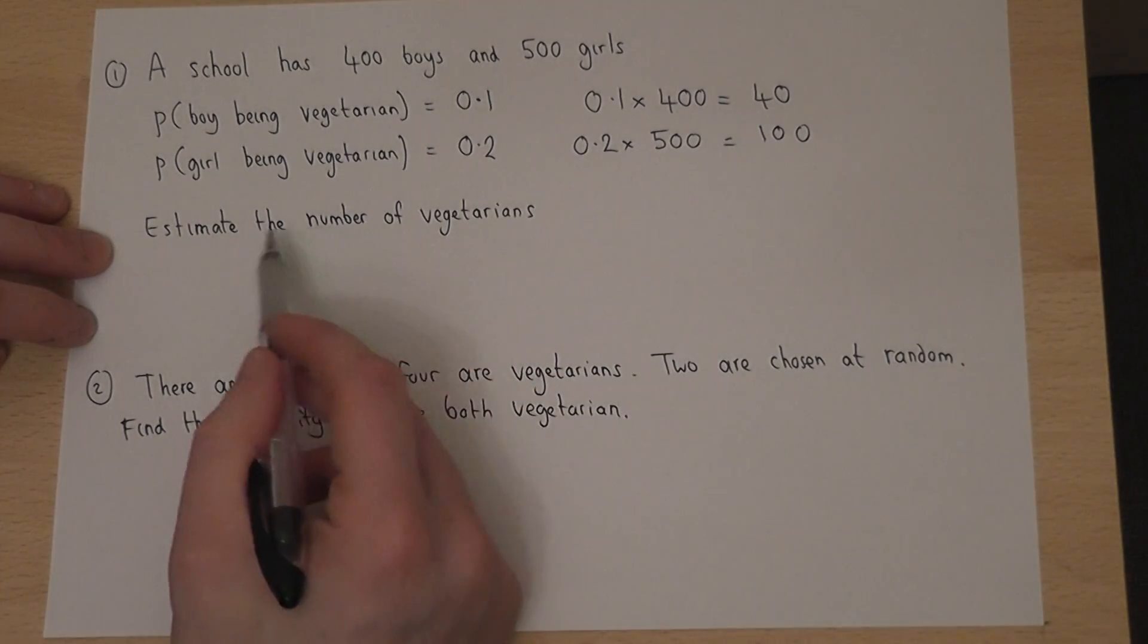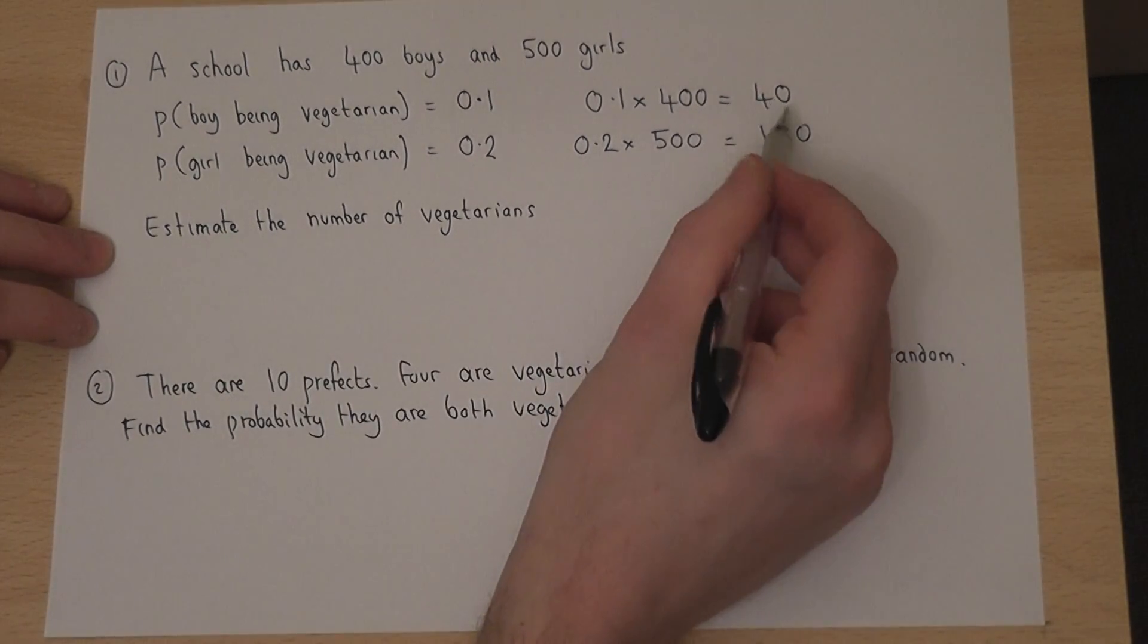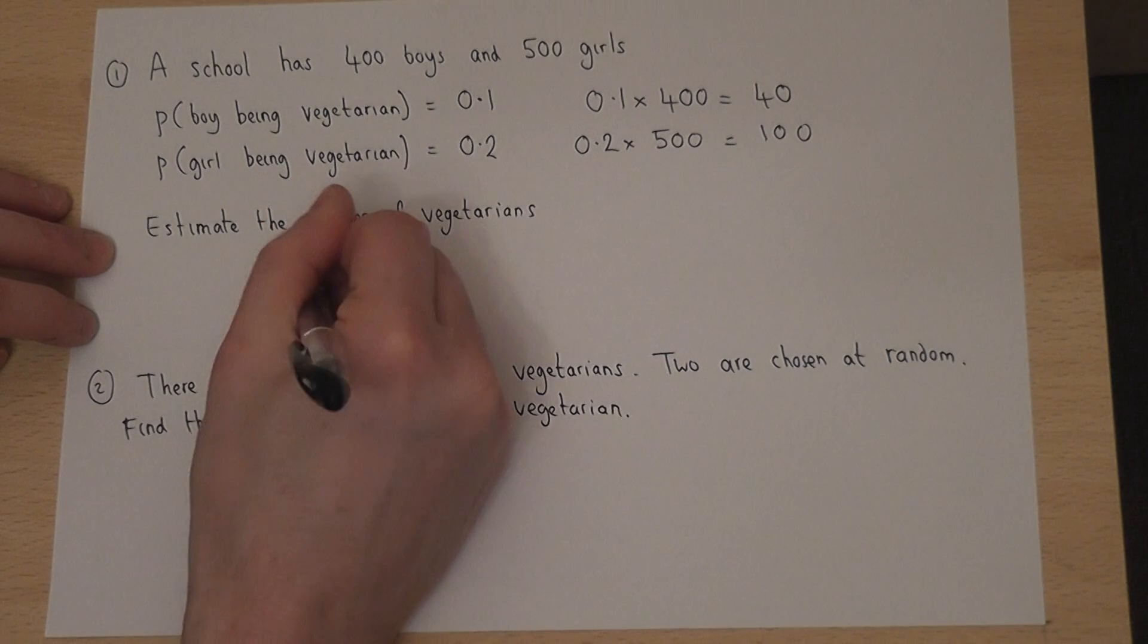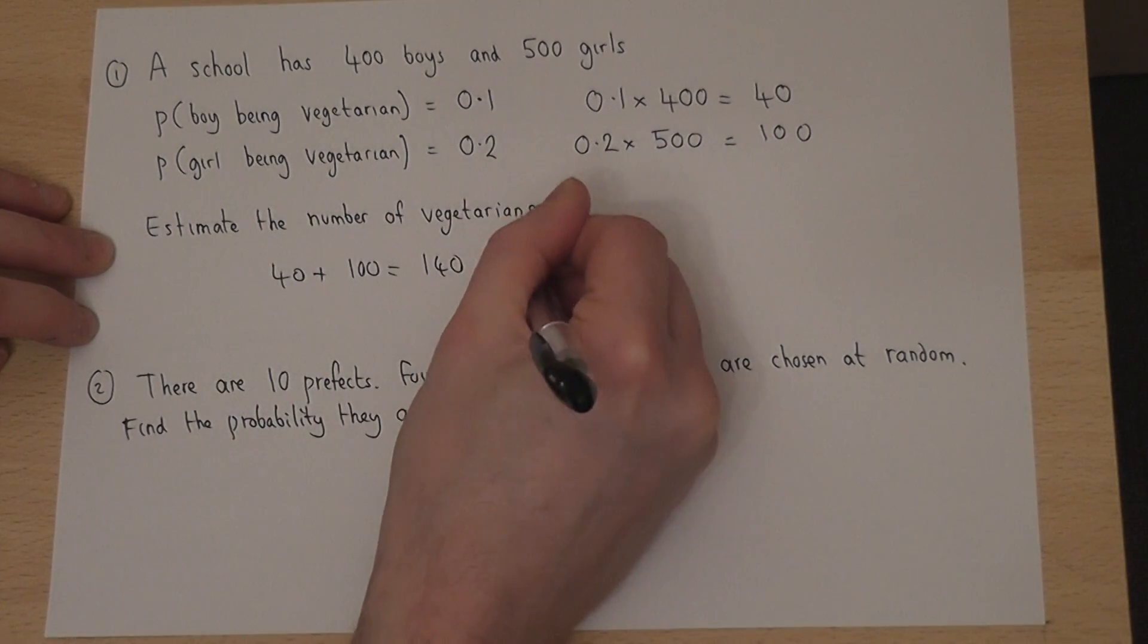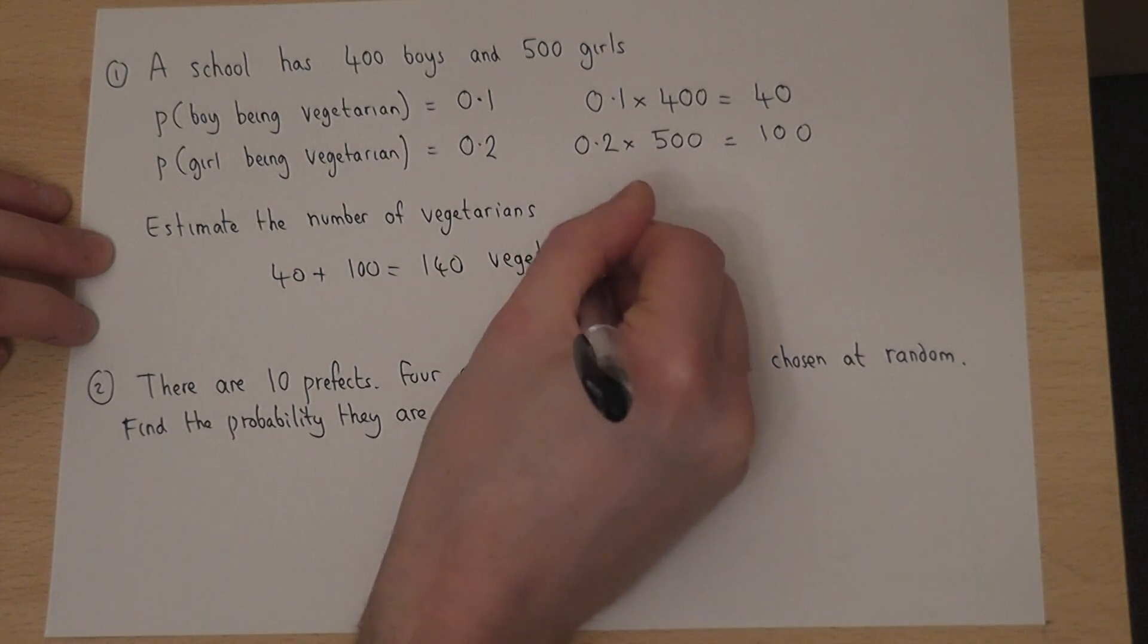So therefore, we'd expect there to be 40 plus 100, which is 140 vegetarians in the school.